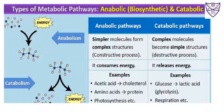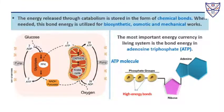Catabolic processes are the opposite of anabolic processes. Here, we break down complex molecules into simple structures. These are destructive processes and, because they are destructive, they release energy. Examples include glucose being converted to lactic acid by glycolysis and respiration. The energy released through catabolism is stored in chemical bonds, and whenever we require this energy, the bond is broken and that is how we use the energy.